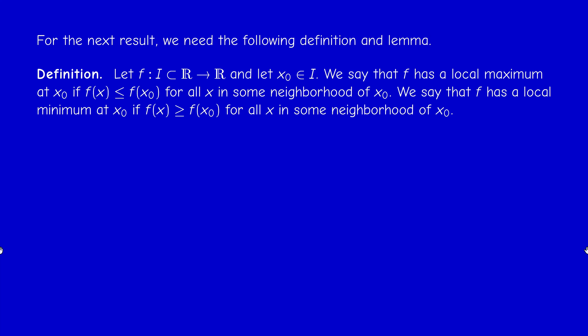Let us revisit the notion of local maximum and local minimum. If we have a function defined on some subset of ℝ into ℝ, and we have a point X₀ in I, we say that F has a local maximum at X₀ if around X₀, F(X₀) is the biggest value of F — so F(X) ≤ F(X₀) for all X in some neighborhood of X₀. We have a similar definition for local minimum.